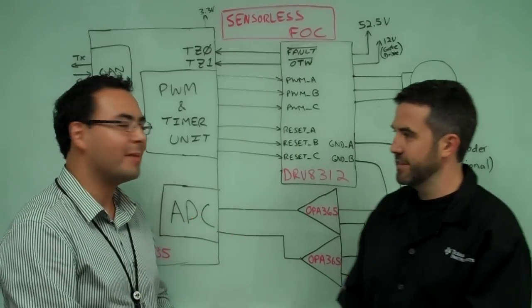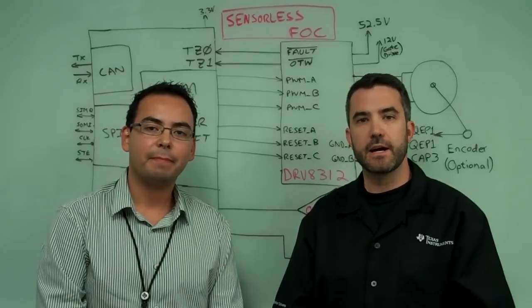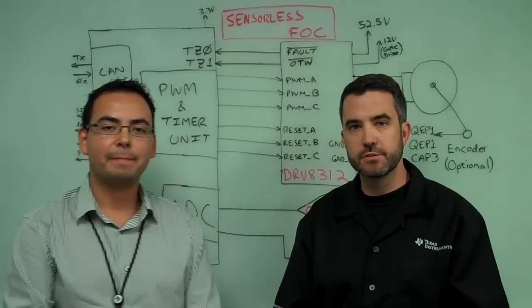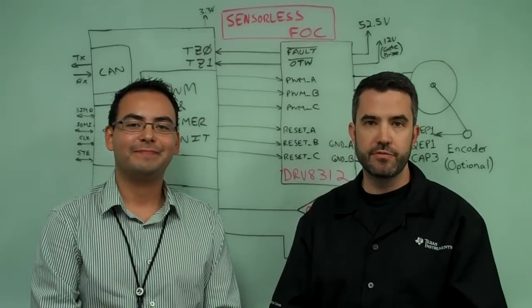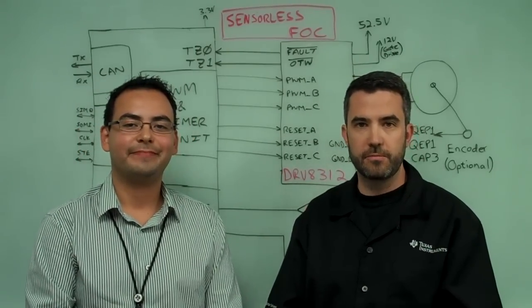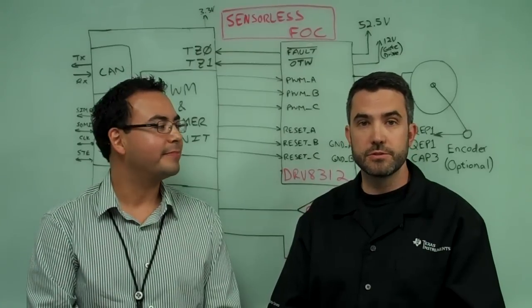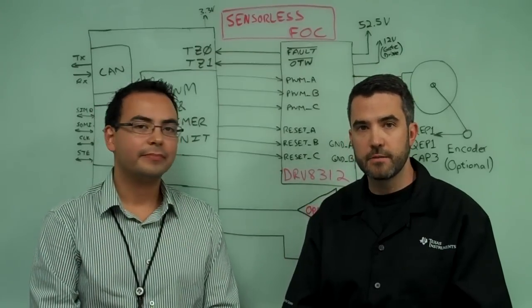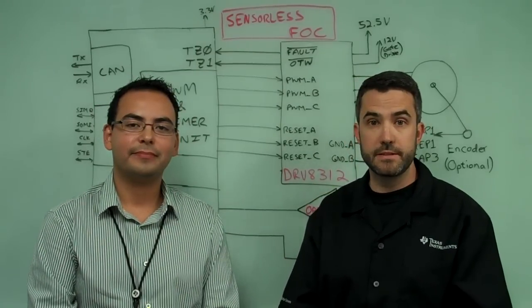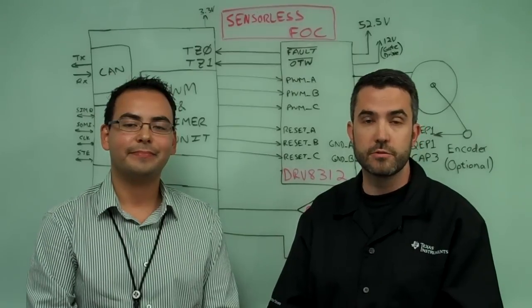Okay, great, thank you. You're welcome. For more information, you can go to ti.com/motor and search in the training tab, where we have another video on field-oriented control. As far as the kit goes, you can also search ti.com for the 8312 and order a kit today. It's available now for $299.